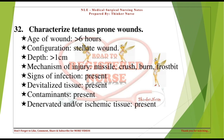Characterize tetanus-prone wounds: age of wound more than 6 hours; configuration — stellate wound; depth more than 1 cm; mechanism of injury — missile, crush, burn, frostbite; signs of infection present; devitalized tissue present; contaminants present; denervated or ischemic tissue present.